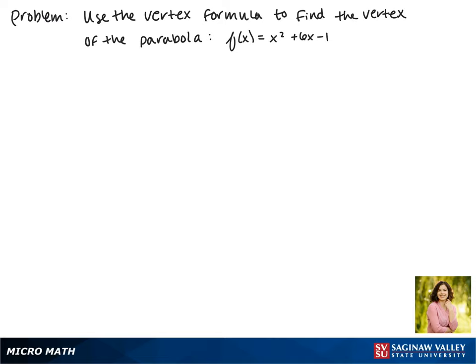Today we'll be using the vertex formula to find the vertex of the parabola f(x) = x² + 6x - 1.